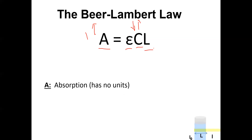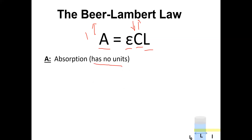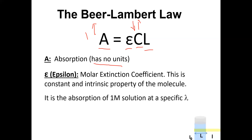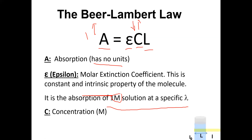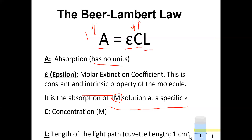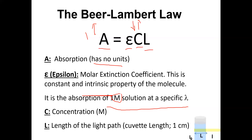A is absorbance and has no units. Epsilon is the molar extinction coefficient — a constant intrinsic to the molecule, representing the absorption of a one-molar solution at a specific wavelength. C is concentration, which can be expressed as molarity, grams per milliliter, etc. L is the length of the light path, usually one centimeter. Epsilon and L are constants.